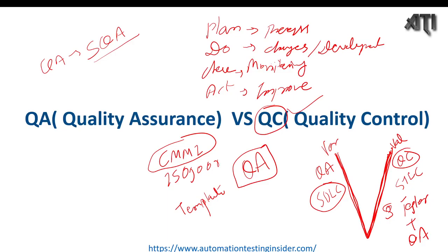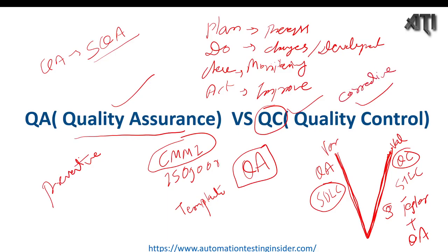Let's discuss more differences. QA is process-oriented; QC is product-focused. QA is mainly focused on the process; QC is mainly focused on the product. QA is a preventive technique — it prevents defects. QC is a corrective technique — it corrects defects.